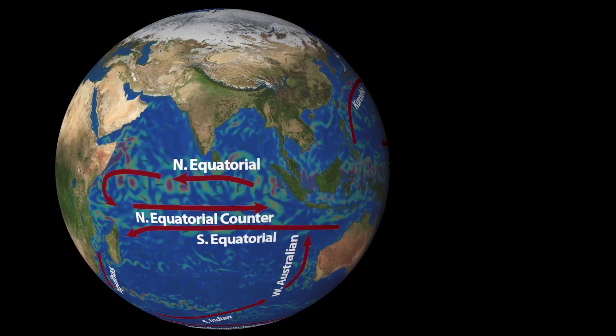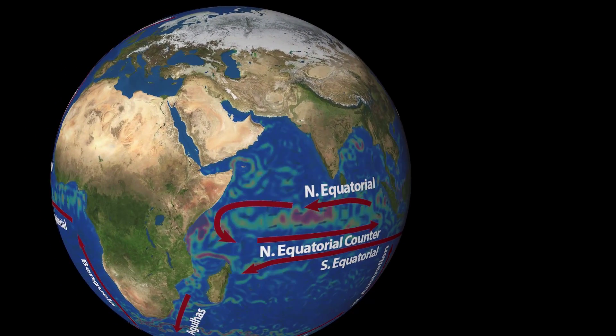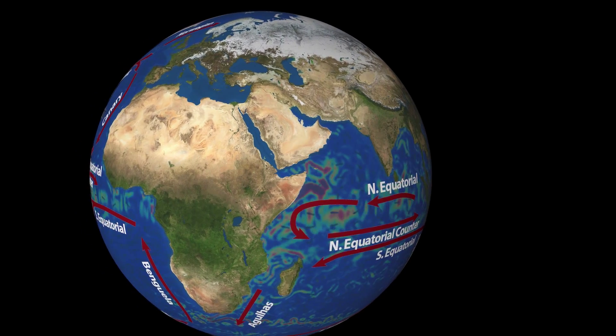Another dominant current in the southern hemisphere is called the Antarctic Circumpolar current. This current is unique in that it circles the globe.